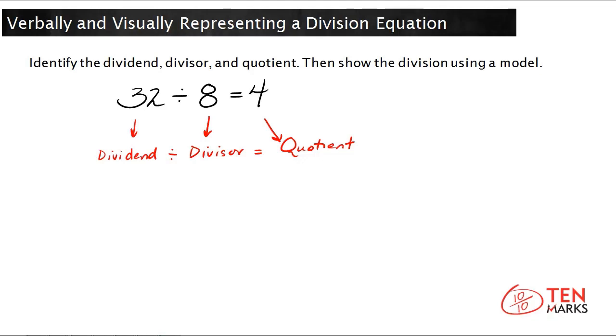Now let's draw a model that represents this division sentence. To draw the model, remember that you can think of division as a total number divided into a number of groups, and then the answer you get is the number in each group, which means that the model needs to have a total of 32, and there needs to be 8 groups, and each of these 8 groups needs to have 4.